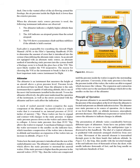Altimeter. The altimeter is an instrument that measures the height of an aircraft above a given pressure level. Since the altimeter is the only instrument capable of indicating altitude, it is one of the most vital instruments installed in the aircraft. A stack of sealed aneroid wafers comprise the main component of the altimeter. An aneroid wafer is a sealed wafer evacuated to an internal pressure of 29.92 inches of mercury (Hg). These wafers are free to expand and contract with changes to static pressure. A higher static pressure presses down on the wafers and causes them to collapse, while a lower static pressure allows the wafers to expand. A mechanical linkage connects the wafer movement to the needles on the indicator face, translating compression into a decrease in altitude and expansion into an increase in altitude.